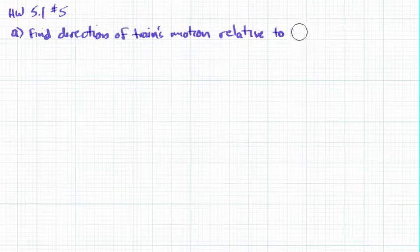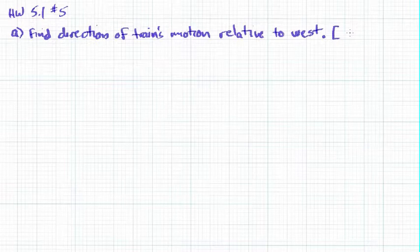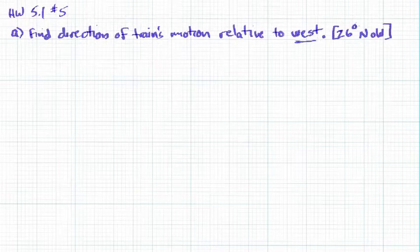I don't want you guys to have to deal with that right now — you have enough to deal with. We want the train's motion relative to west. The answer is 64 degrees west of north like it said, but we don't like it based off the vertical — we want it based off the horizontal. So the same thing that is 64 west of north would be 26 degrees north of west. That's our answer for part A. Go ahead and make that change and change the final answer as well.